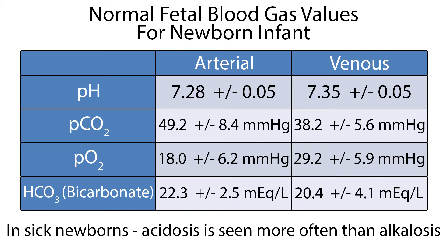The umbilical artery values were pH 7.28 ±0.05, pCO2 49.2 ±8.4 mmHg, pO2 18 ±6.2 mmHg, and bicarbonate 22.3 ±2.5 mEq/L. The umbilical venous values were pH 7.35 ±0.05, pCO2 38.2 ±5.6 mmHg, pO2 29.2 ±5.9 mmHg, and bicarbonate 20.4 ±4.0 mEq/L.